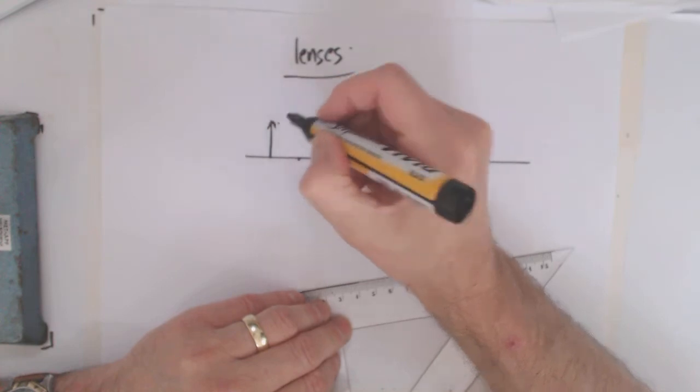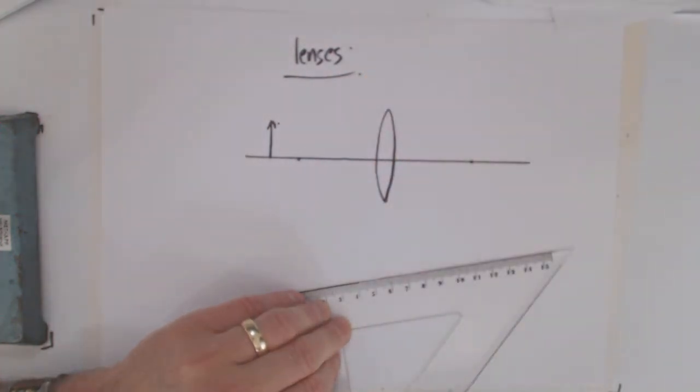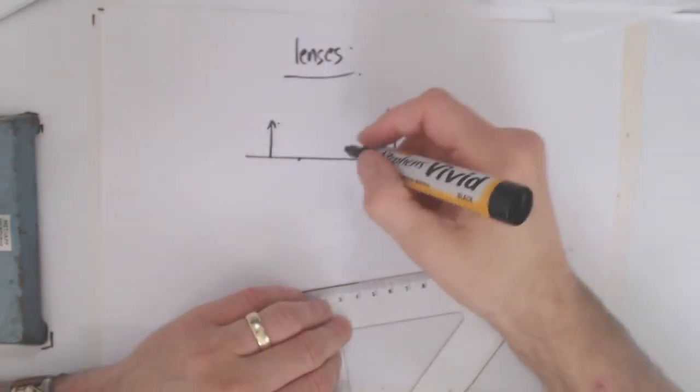Now what determines the size of the images to a certain degree? Remember what we found is as we brought the object in closer - when we brought it in closer than the focal point, we found that it actually produced a virtual image.